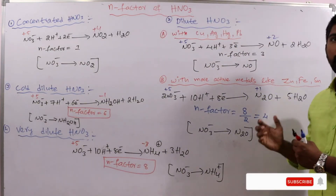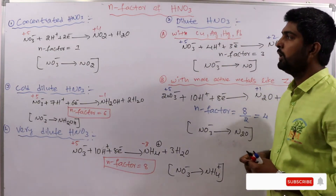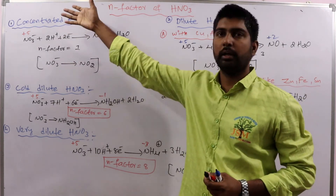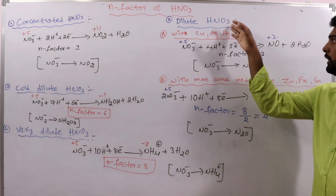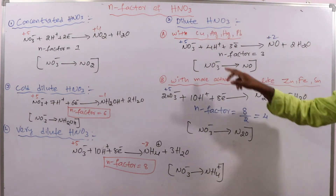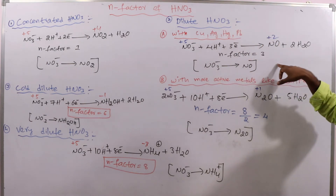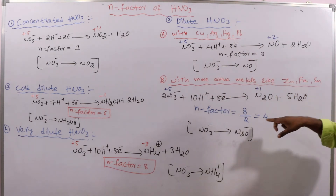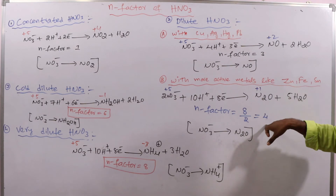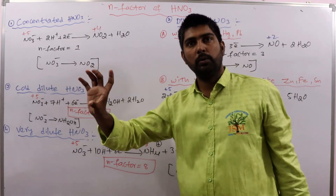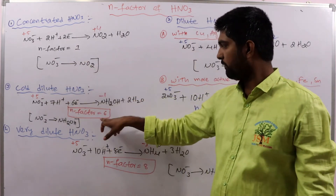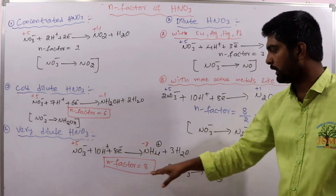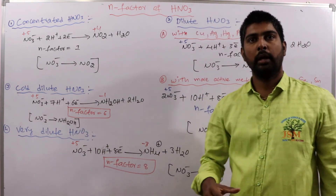So HNO3 has different N-factors at different concentrations: concentrated HNO3 gives N-factor 1; dilute HNO3 with less reactive metals gives N-factor 3; with active metals like zinc, iron, tin, N-factor is 4; cold and dilute HNO3 gives N-factor 6; and very dilute HNO3 gives N-factor 8.